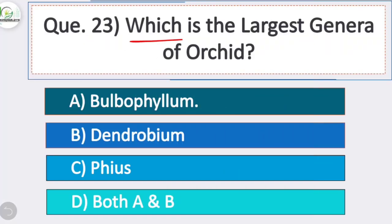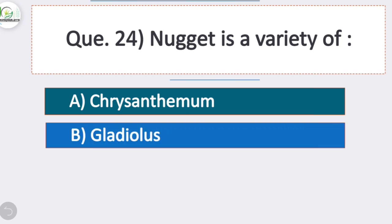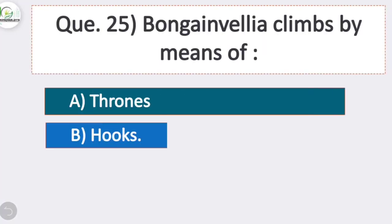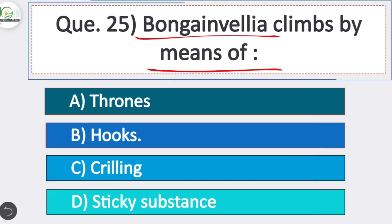Question 23: Which is the largest genera of orchid? Option A is correct — Bulbophyllum is the largest genera of orchid. Question 24: Nugget is a variety of — option C is correct — Marigold. Question 25: Bougainvillea climbs by means of — option B is correct — hooks. Bougainvillea climbs by means of hooks.